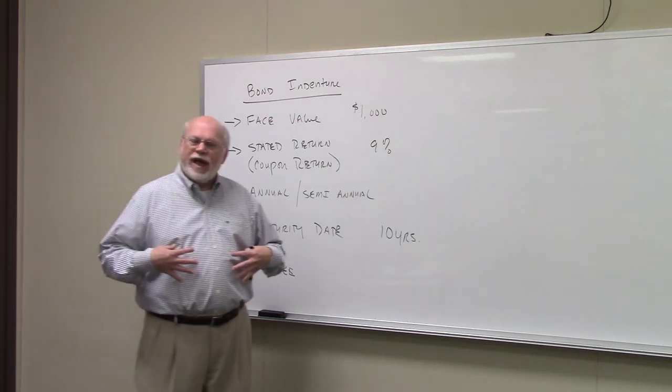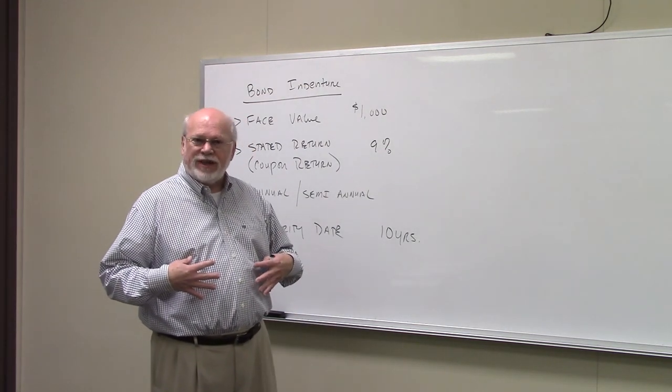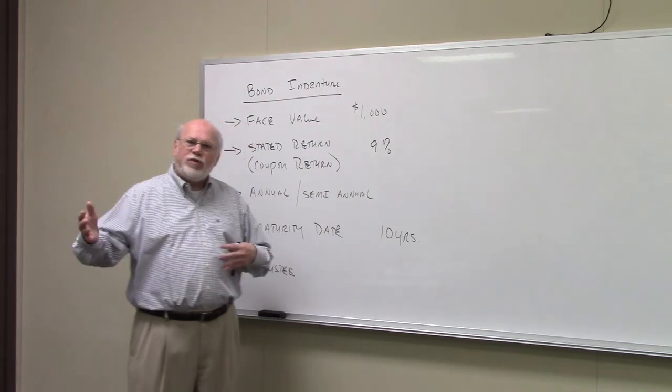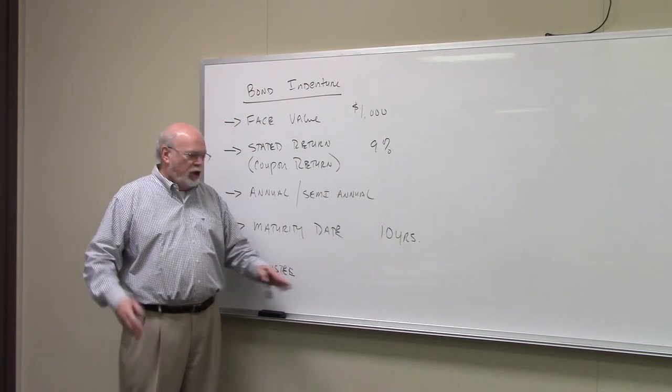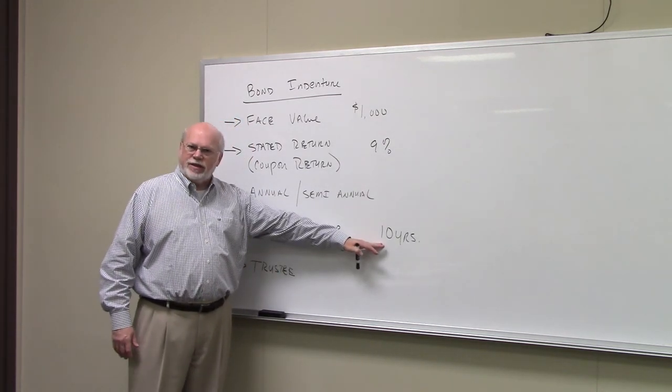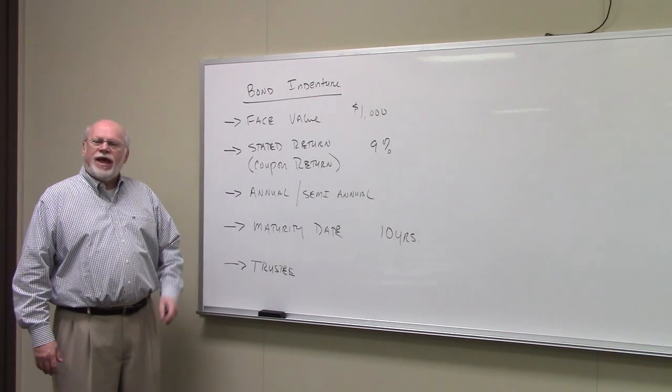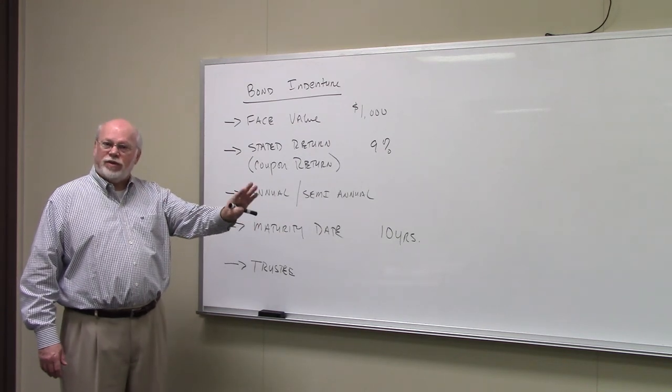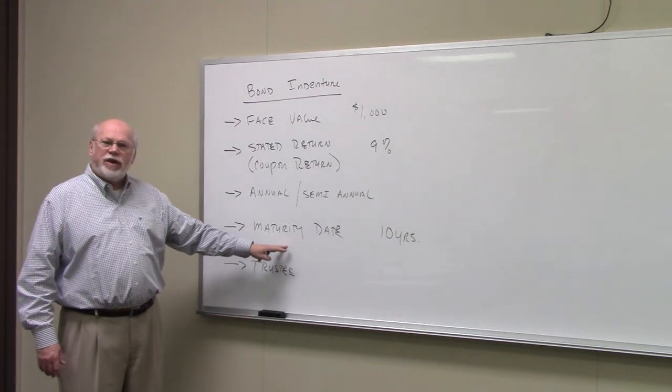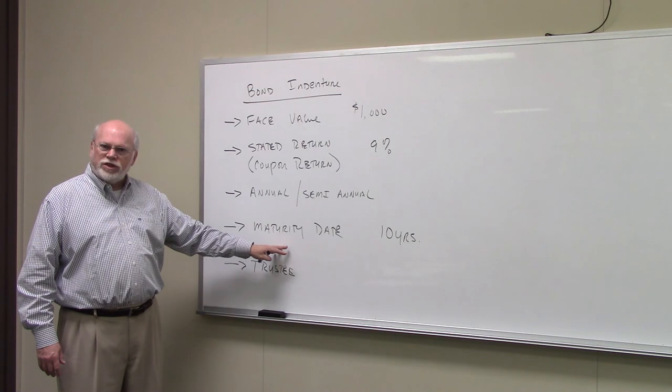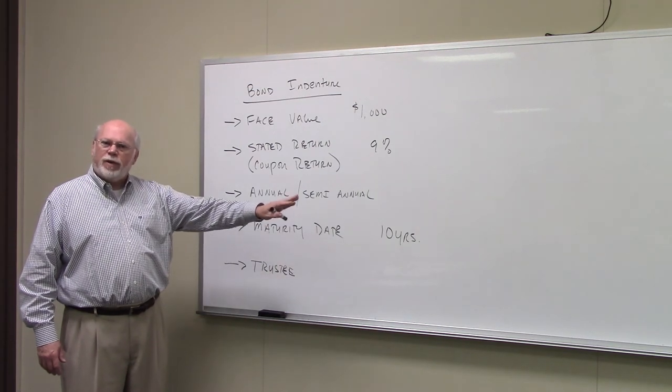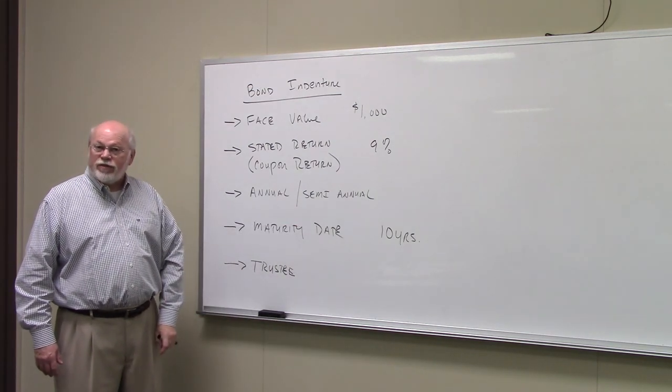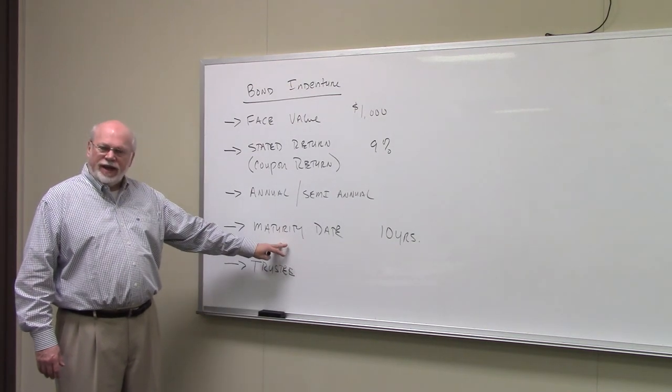In classes like we're having, in textbooks and things like that, we don't usually give you a date specific. We tell you something like this is a 10-year bond. Technically, what we're telling you is that there's 10 years remaining on the life of the bond. So this could have been a 15-year bond originally, but five years have gone by, and there's 10 years left on the life of the bond.